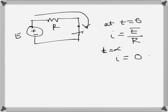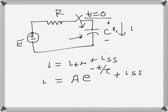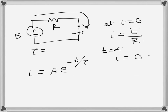The steady-state value of the current is zero. The time constant tau for an RC circuit is R times C — unlike the inductor case where it was L over R, here it is RC. So the full expression is i = A·e^(minus t over RC) plus zero, and we need to find A from the boundary condition.